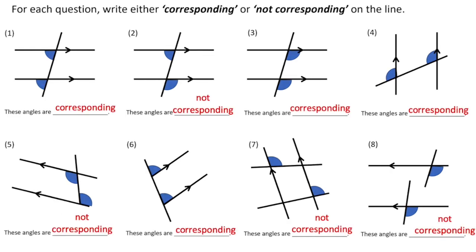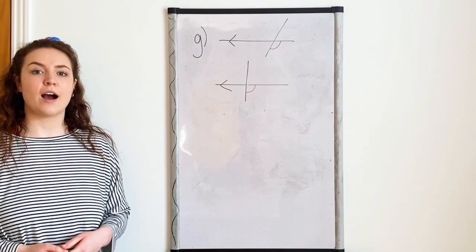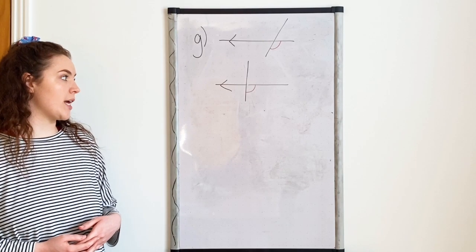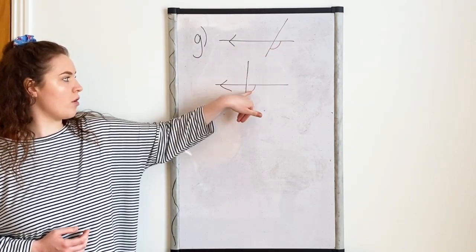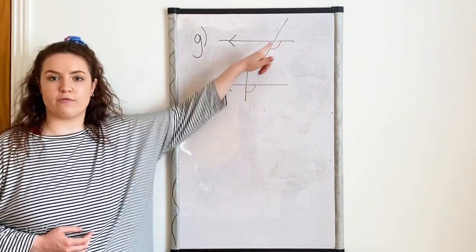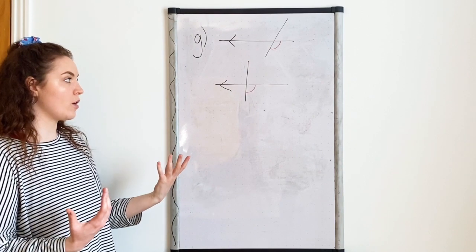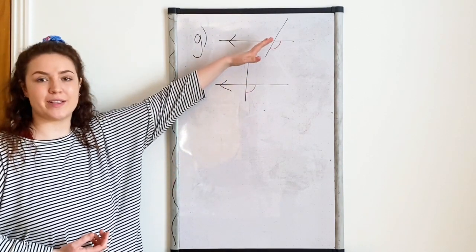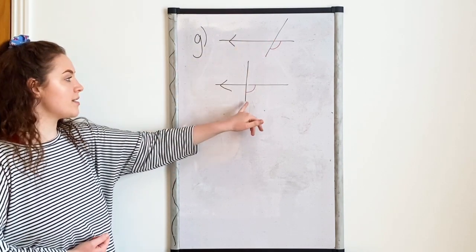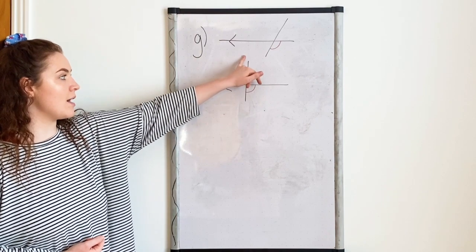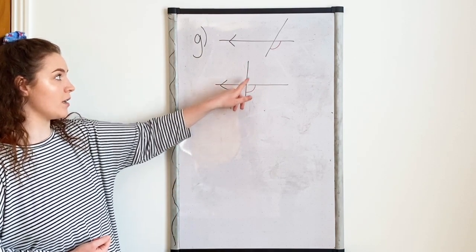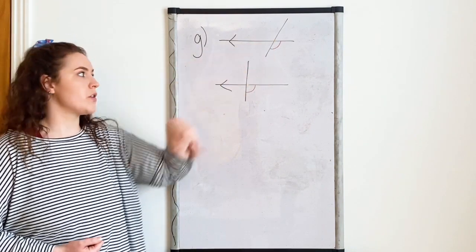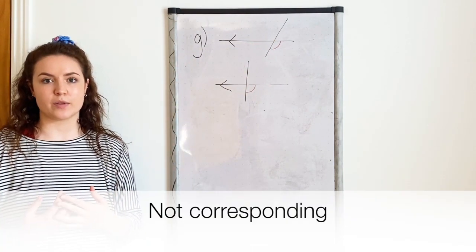Okay, and here are the answers. I've decided to quickly go through G. You can see that I've got two angles both on the bottom right-hand side. Although they look like they're corresponding, they're not on the same transversal. You can see that these lines aren't actually even transversals because they're only intersecting one other line. So those are not corresponding angles.